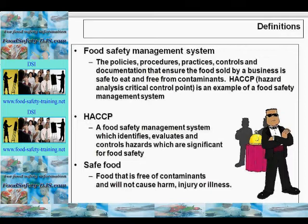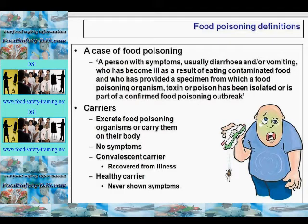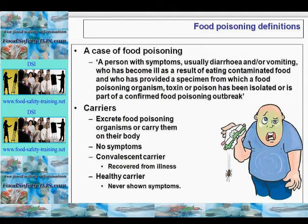Safe food is food that is free of contaminants and will not cause harm, injury or illness. Food poisoning — a definition not on the slide but in your course notes — is an acute illness; acute meaning it happens quickly, as opposed to chronic which takes a long time. It is brought on by eating contaminated or poisonous food, usually with symptoms of diarrhea and/or vomiting. A case of food poisoning refers to a person with those symptoms who has become ill as a result of eating contaminated food and who has provided a specimen from which a food poisoning organism, toxin or poison has been isolated, or who is part of a confirmed food poisoning outbreak.